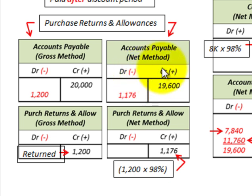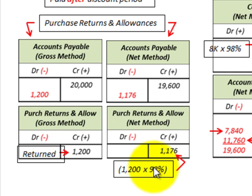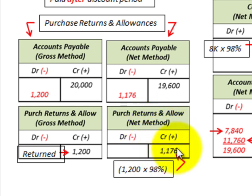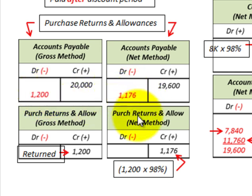Under the net method for the same $1,200 purchase return, we take the net amount: $1,200 times 98% gives us $1,176. We debit accounts payable for $1,176 and credit purchase returns and allowances for $1,176. So with the gross method you use the gross amount, and with the net method you use the net amount for your recording.